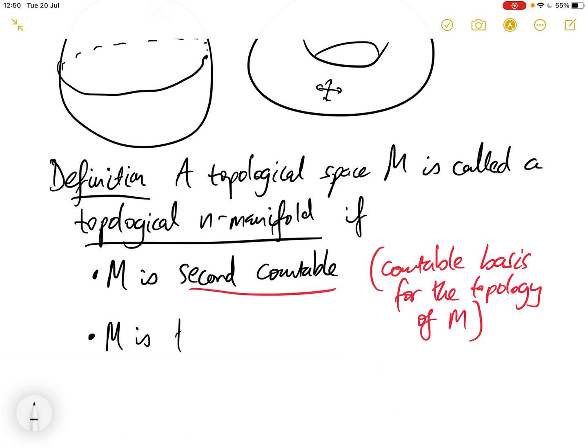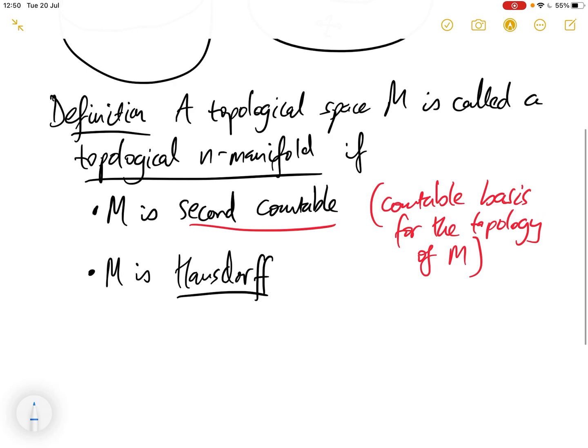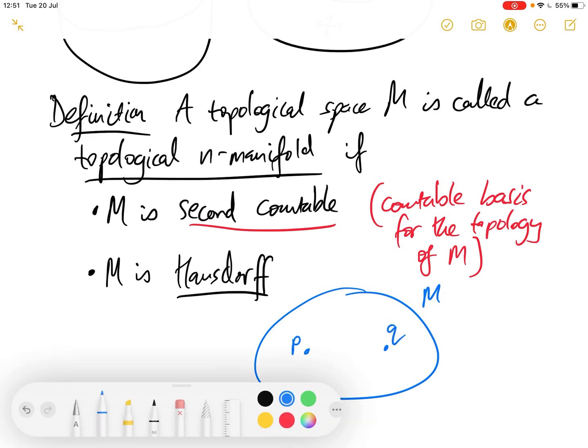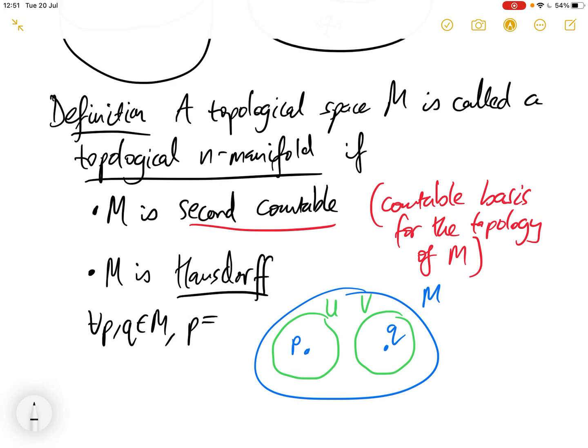So requiring there's a countable basis - that's what it means for the space to be second countable. We also require M is Hausdorff. What does this mean? If we have our topological space M with two points, call them P and Q, if there are distinct open neighborhoods U and V of P and Q that are disjoint, and this is true for every pair of distinct points in the space, then it's called a Hausdorff space. So we can say: for every P and Q in M that are distinct, there are open neighborhoods U and V such that P is in U, Q is in V, and the intersection is empty - they're disjoint.